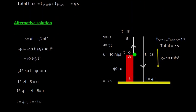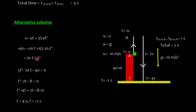Alternatively, you can solve this problem using s = ut + ½at². Here, take s as displacement in the negative direction, that is -40 meters. Taking upward as positive and downward as negative: -40 = 10t - 5t². Rearranging: 5t² - 10t - 40 = 0.